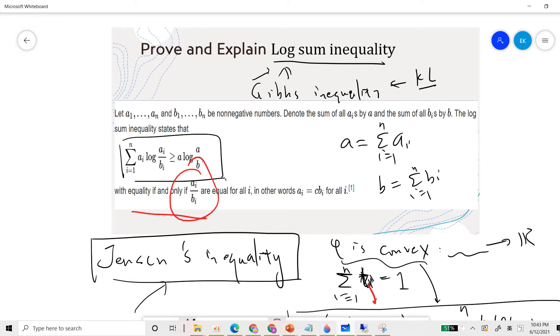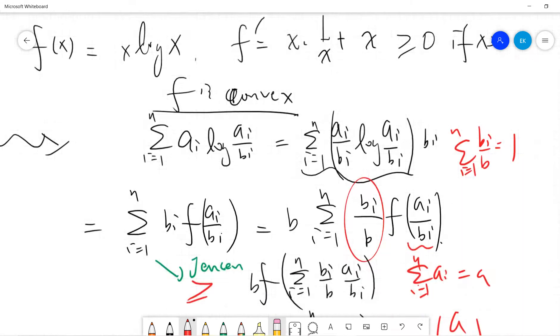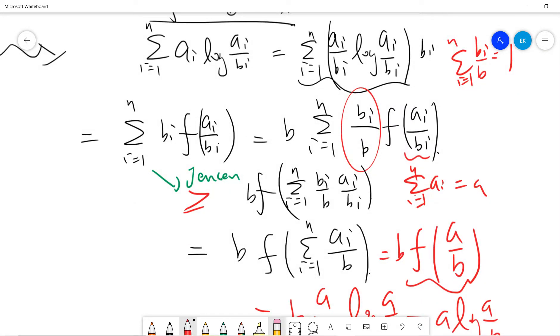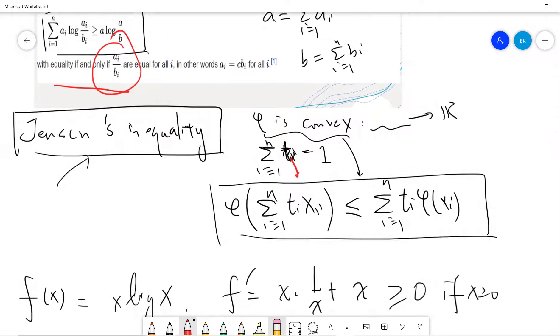So that means, when is the Jensen's inequality holds? Jensen's inequality holds when everything is, all are the same, right? If you see, when is the Jensen's inequality holds for these two? So you are asking that, when is this guy true, right?